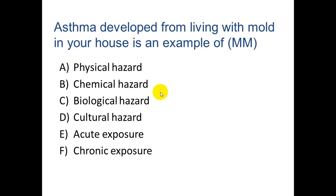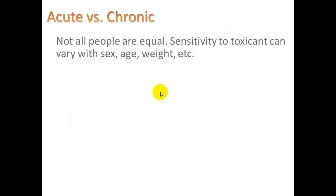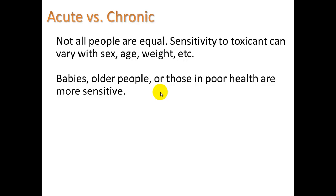Asthma developed from living with mold in your house — what kind of hazard is this? This is a multiple-mark question. It is a biological hazard because mold is a fungus, and this is a case of chronic exposure — you're exposed day in and day out over months or years, as opposed to acute exposure, which is like walking into a place and getting blasted with a chemical. Not all people are equal — sensitivity to toxicants can vary with sex, age, weight, and so on. Babies and older people or those in poor health are more sensitive. Babies put things in their mouths, breathe more, their immune systems are still developing, and changes to undifferentiated stem cells can lead to mutations.